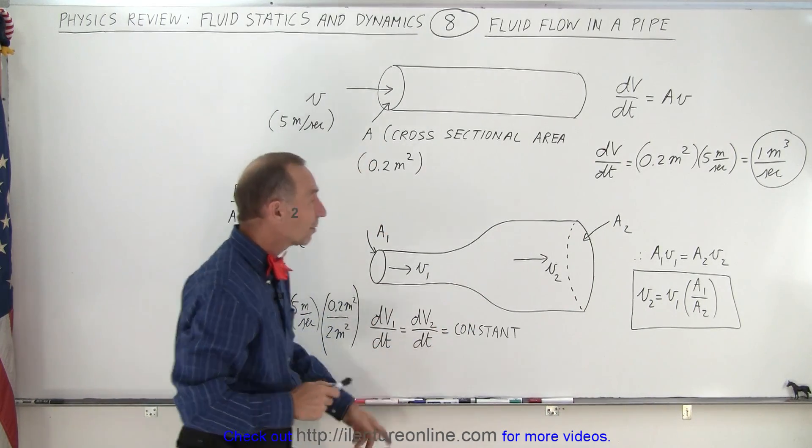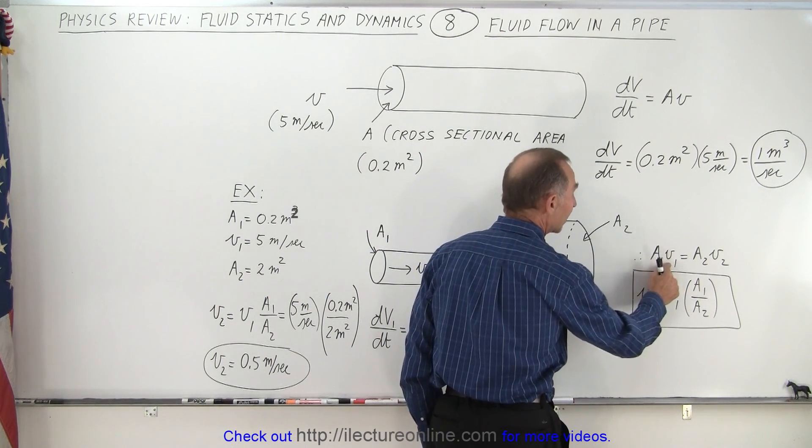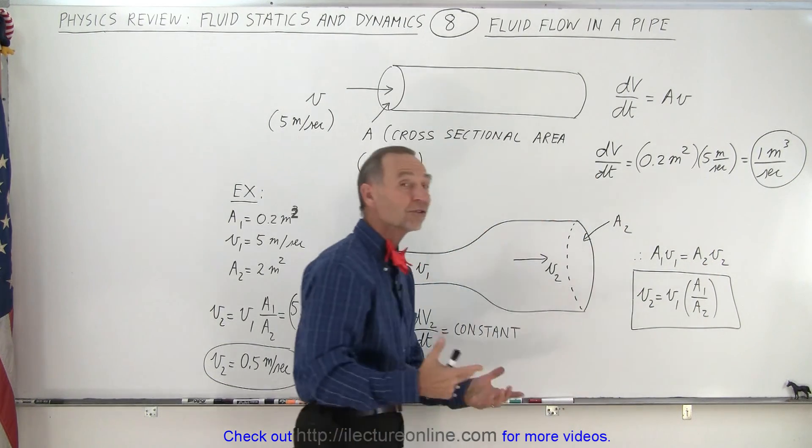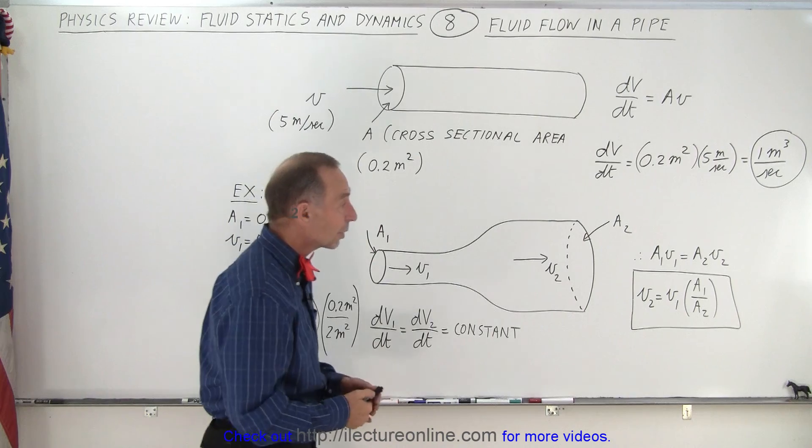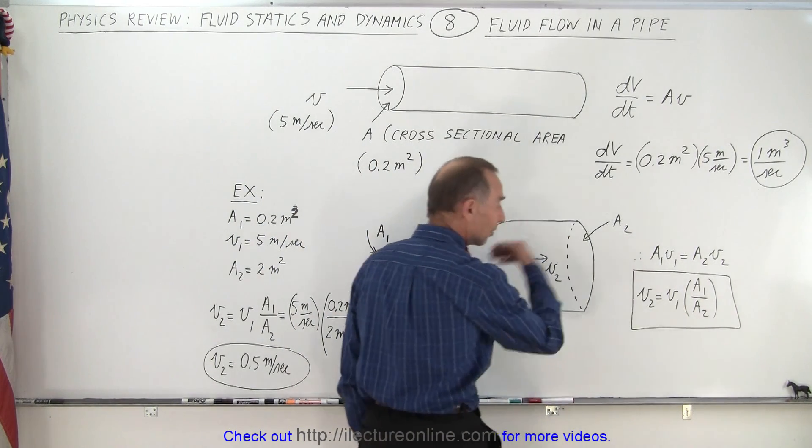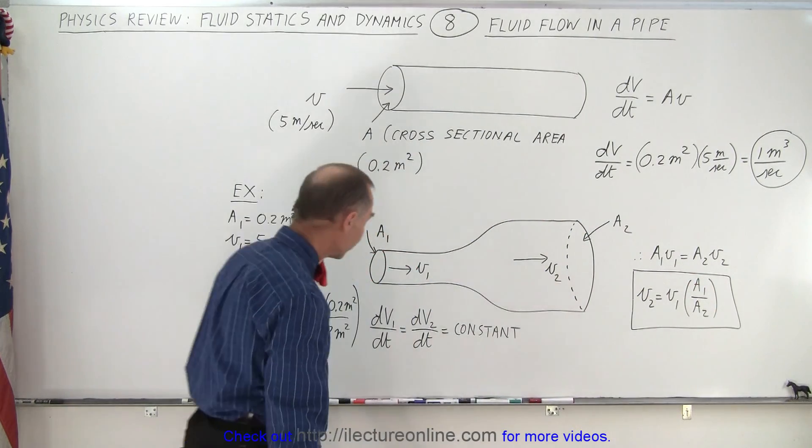So that means that the product of the cross-sectional area times the velocity of any section of pipe must equal the cross-sectional area times the velocity of any other section of the pipe. And so that way we can solve for the velocity in another section being equal to the velocity in the first section times the ratio of the area in the first section divided by the area in the second section.